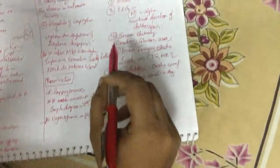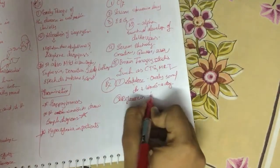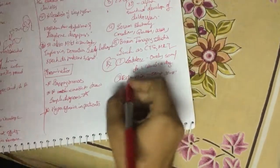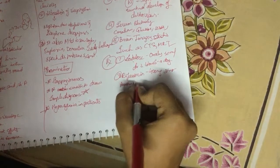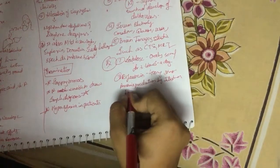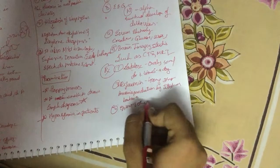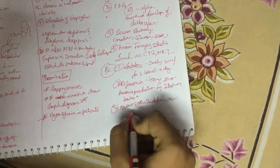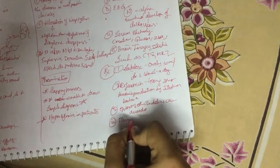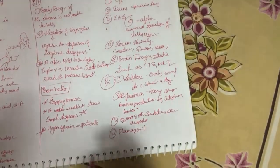Other treatments: Rifaximin 400 milligrams three times a day, which controls ammonia production by intestinal bacteria. Opioids and other sedatives are avoided. Flumazenil, a benzodiazepine antagonist, is effective in some patients with hepatic encephalopathy.